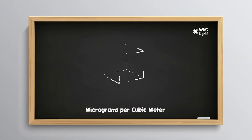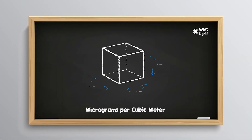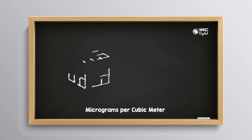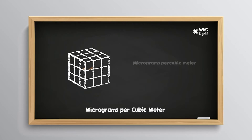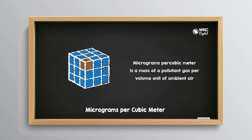What are micrograms per cubic meter? Micrograms are a unit of mass — one millionth of a gram to be exact — and cubic meters describe a volume occupied by an equilateral cube with a one-meter side length. Therefore, micrograms per cubic meter is a mass of a pollutant gas per volume unit of ambient air.